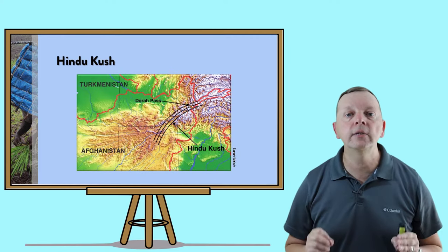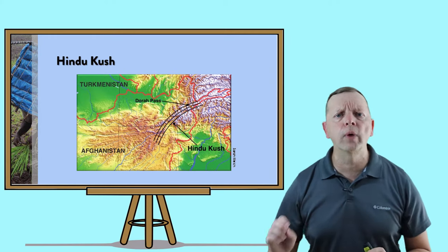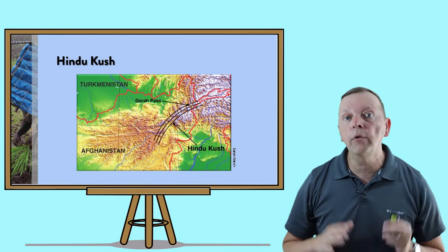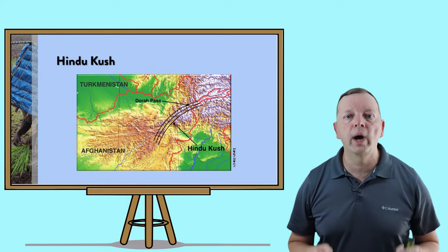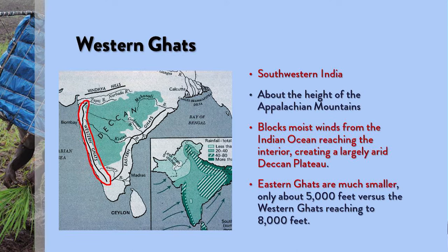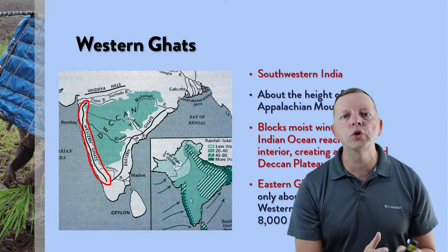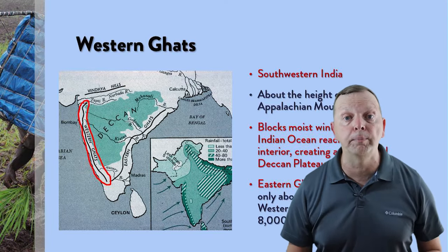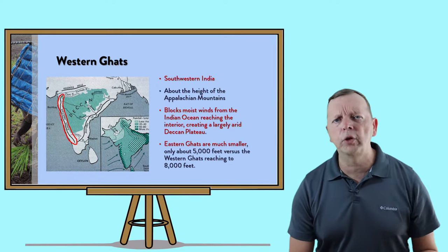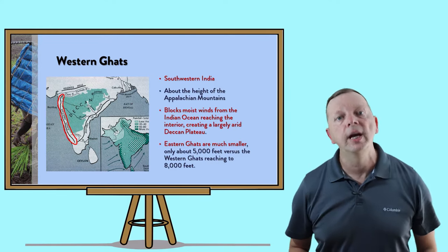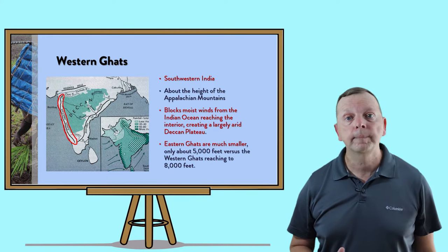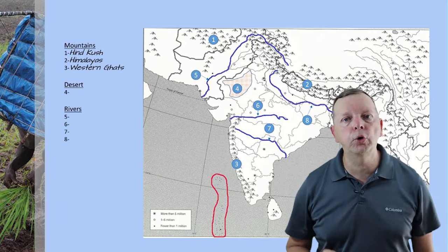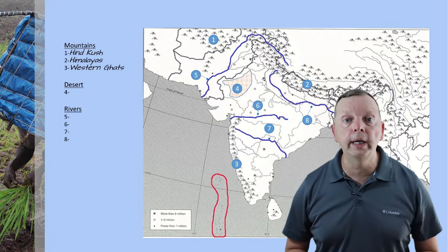This process continues today, which is why Mount Everest continues to grow an eighth of an inch every year. The second mountain range is the Hindu Kush, which runs from Pakistan down into the central portion of Afghanistan — these mountains are over 20,000 feet tall. Our third mountain range is the Western Ghats, found along the southwestern coast of India at about 8,000 feet. They impact climate by blocking moisture from the Indian Ocean, creating a semi-arid region known as the Deccan Plateau. There are also Eastern Ghats along the eastern coastline of India, about 5,000 feet in height. On the map: number one is the Hindu Kush, number two is the Himalayas, and number three is the Western Ghats.